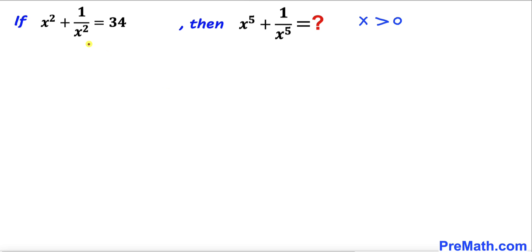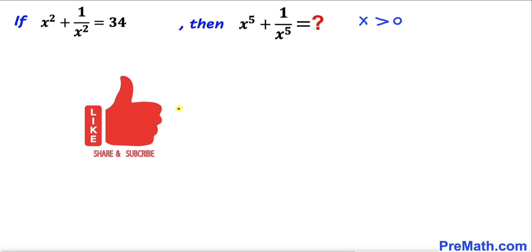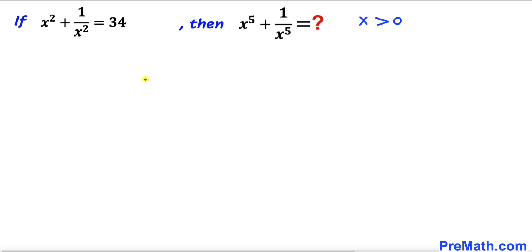Welcome to pre-math. In this video, if x² + 1/x² = 34, then what is going to be the value of x⁵ + 1/x⁵, where x is greater than 0? Please don't forget to give a thumbs up and subscribe. Let's go ahead and get started with the solution.